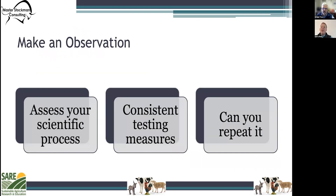Step five is to make an observation. Once your experiment is complete, you collect your measurements and analyze them to see if they support your hypothesis or not. There are some tools that can be helpful in this step that we'll talk about more in other presentations, such as a partial budget.